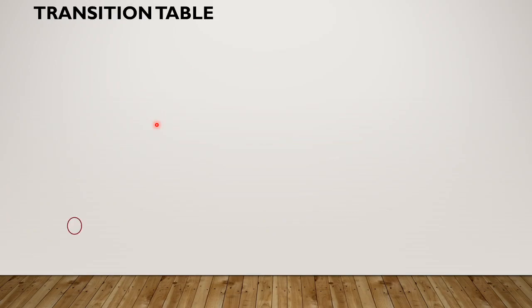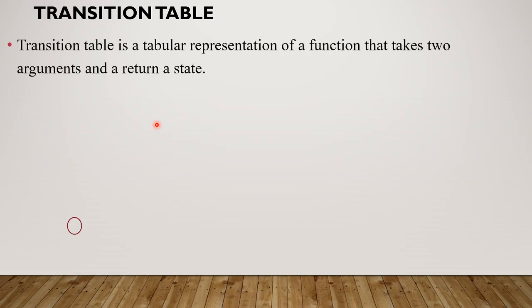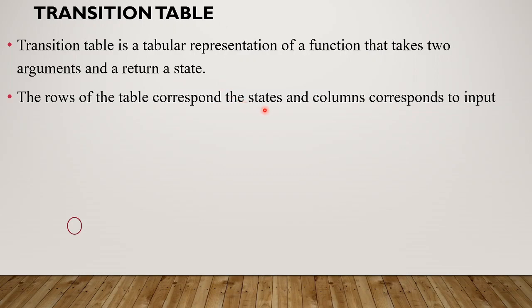Next is the transition table. A transition table is a tabular representation of the transition function that takes two arguments — a state and an input — and returns a next state. The rows of the table correspond to the states and the columns correspond to the inputs.